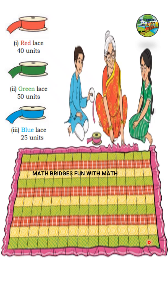Now we have to find out how much lace is needed. First, start counting the horizontal green boxes. If you count: 1, 2, 3, 4, 5, 6, 7, 8, 9, 10, 11, 12, 13, 14, 15 — there are 15 boxes horizontally. So in the opposite side also we will have 15 boxes.